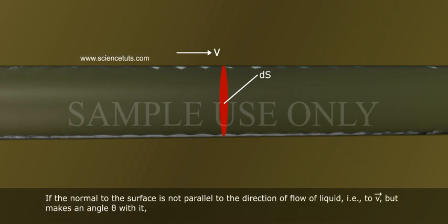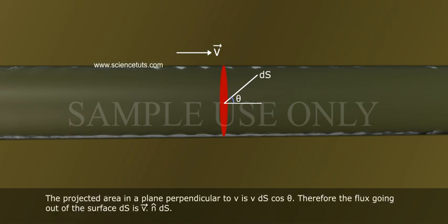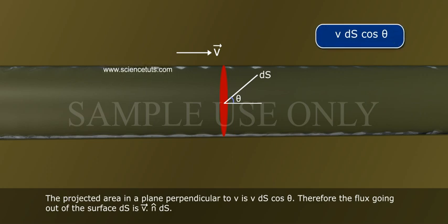If the normal to the surface is not parallel to the direction of flow of liquid, that is, to v bar, but makes an angle theta with it, the projected area in a plane perpendicular to v is v ds cos theta. Therefore, the flux going out of the surface ds is v bar dot n cap ds.